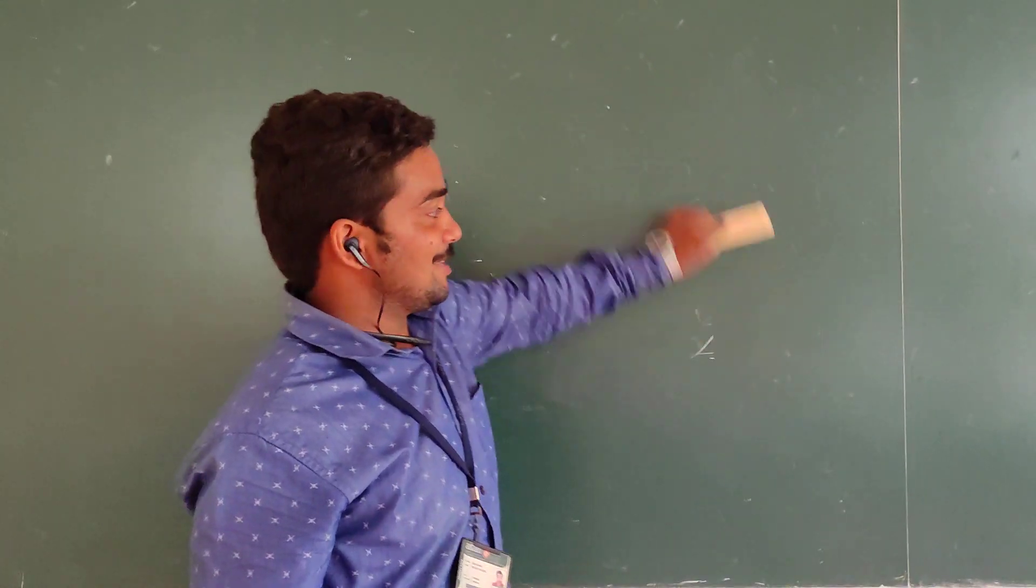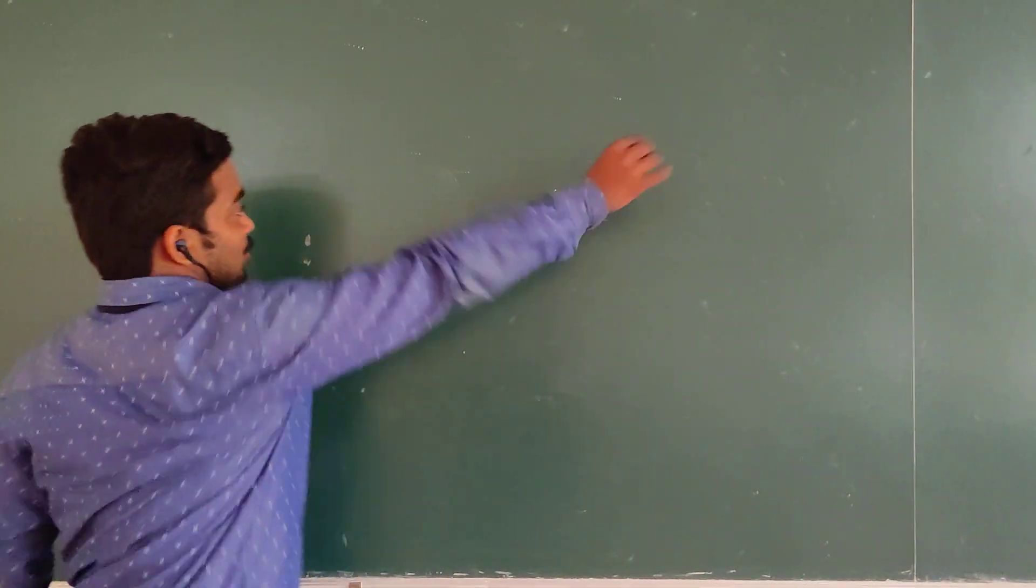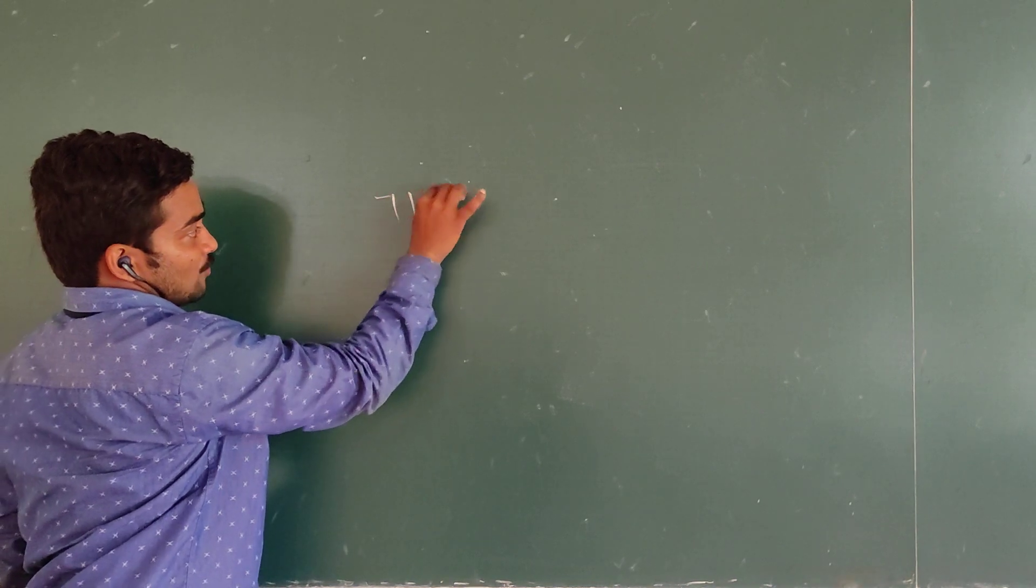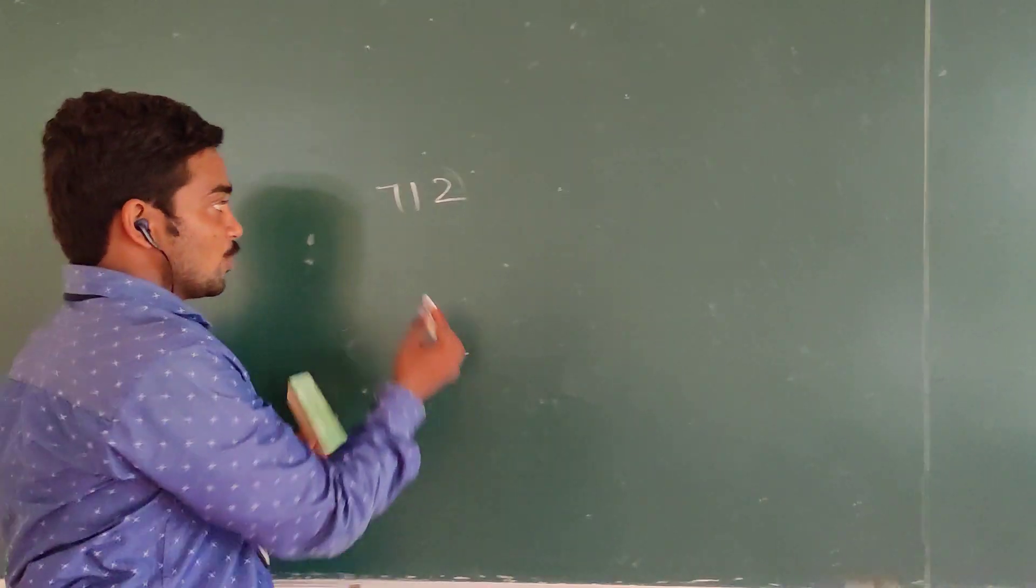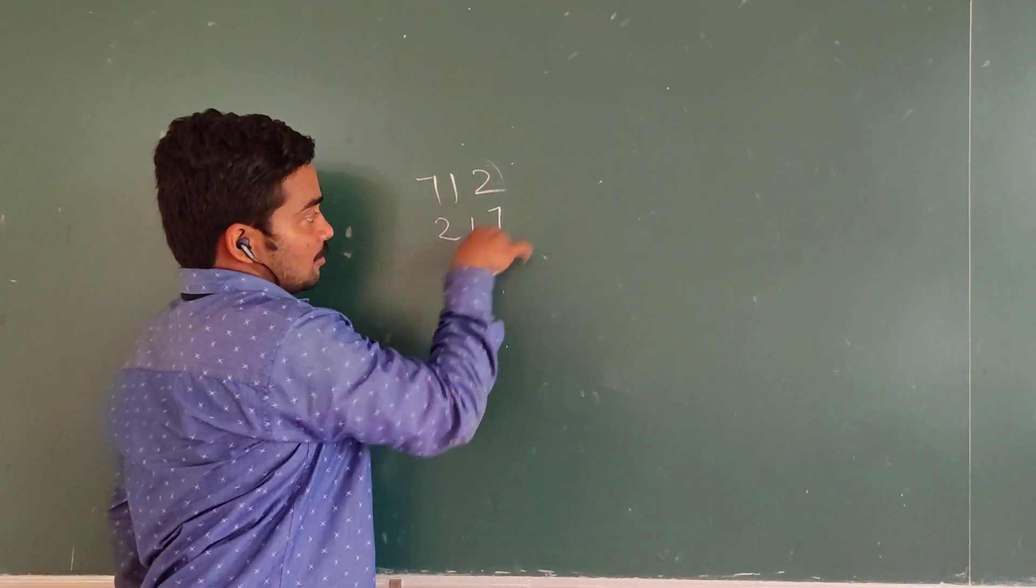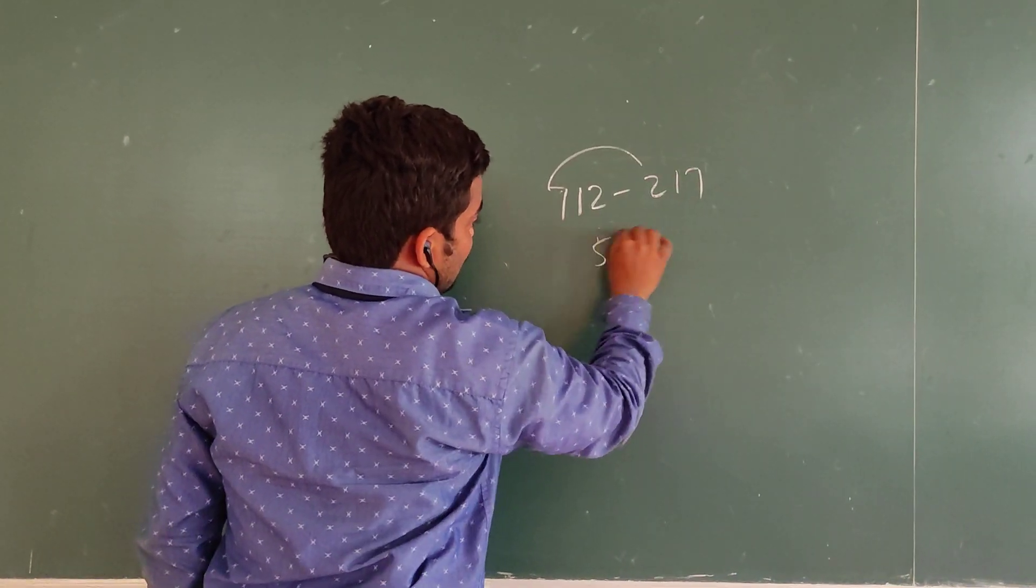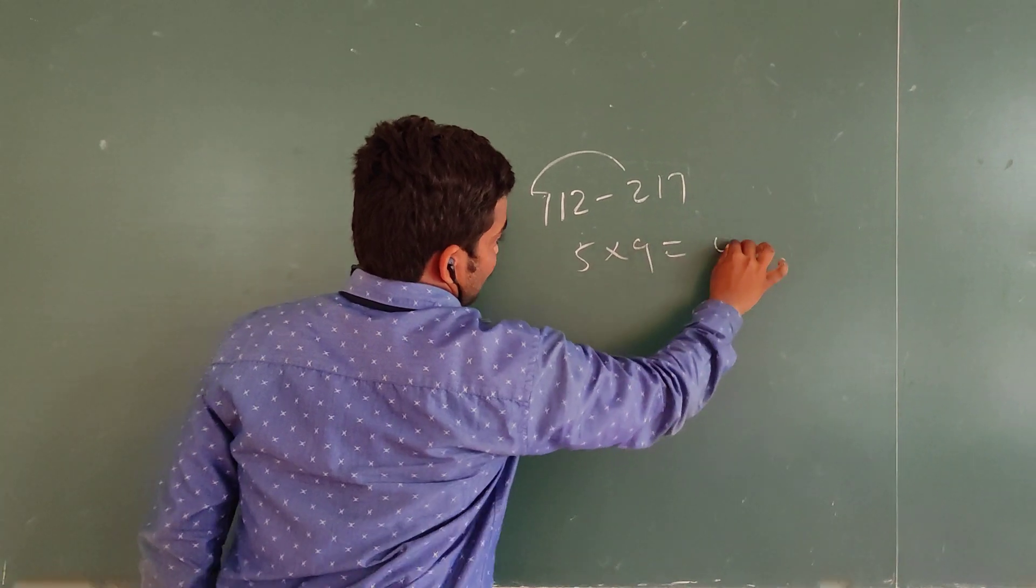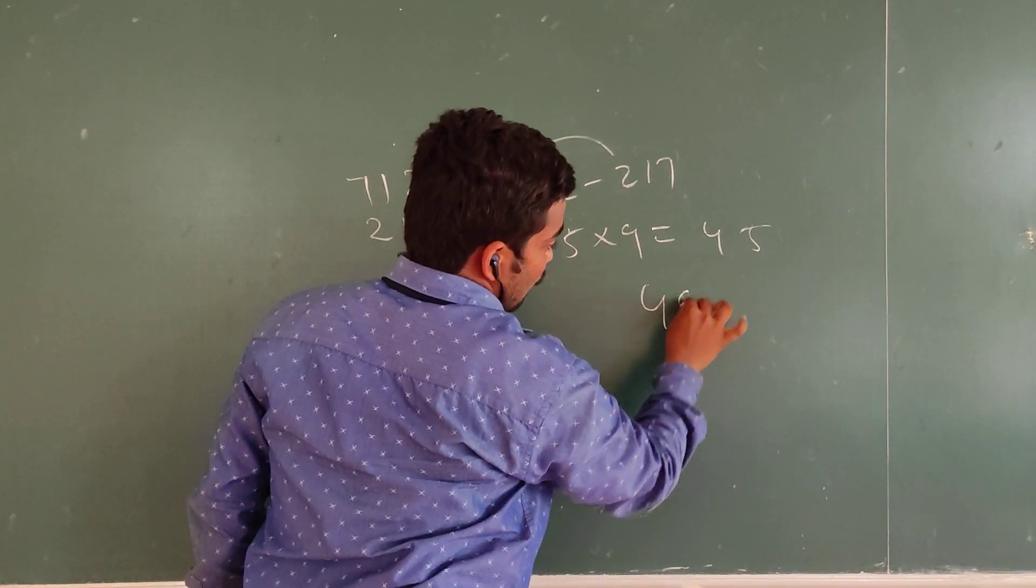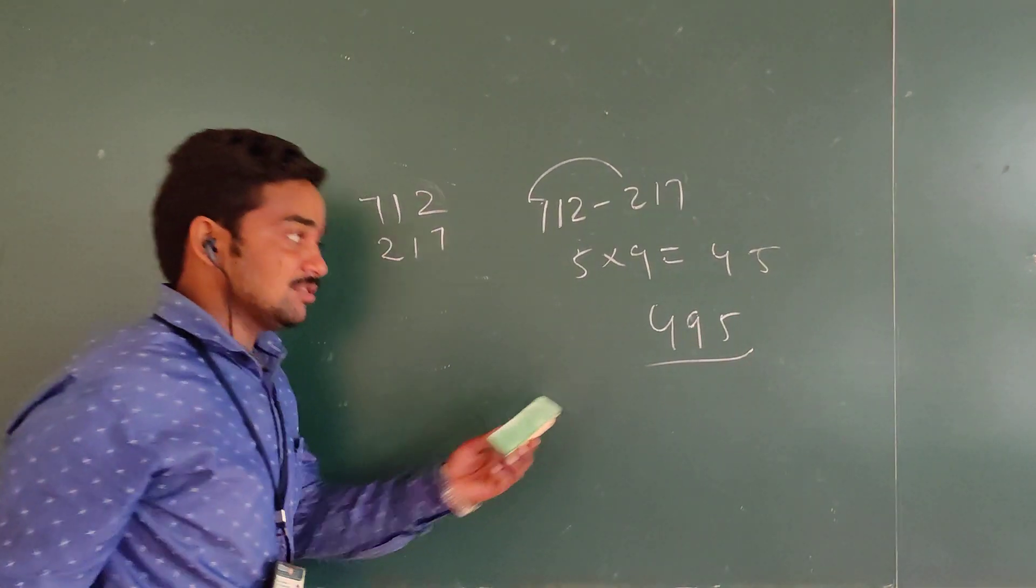For your convenience, I will take another number: 742. Now, I am going to reverse the number: 247. Now, 742 minus 247. 7 minus 2 is 5, multiply by 9: 45. So, our answer is 495. 495 is our answer.